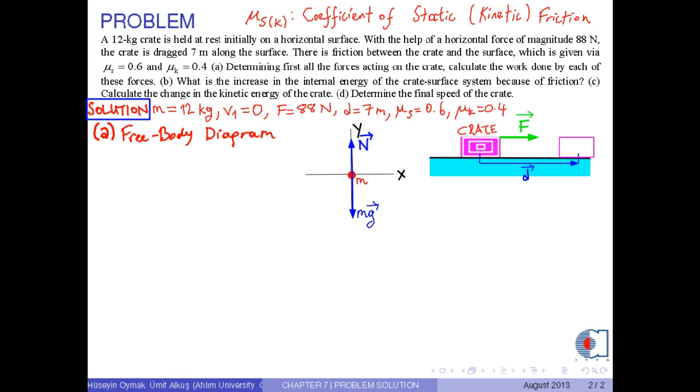Because there is no motion along the y-axis, it has the magnitude of m times g by Newton's second law. And the external force F is drawn as it is. Finally, since there is motion to the right, the kinetic friction force is drawn to the left. As the final step, we draw the acceleration vector to the right, but not on the body. It is shown by an arrow of different color or different shape. Okay, this is the free body diagram for the crate.